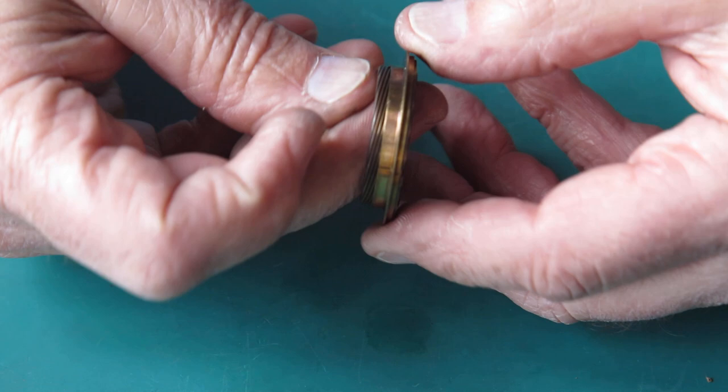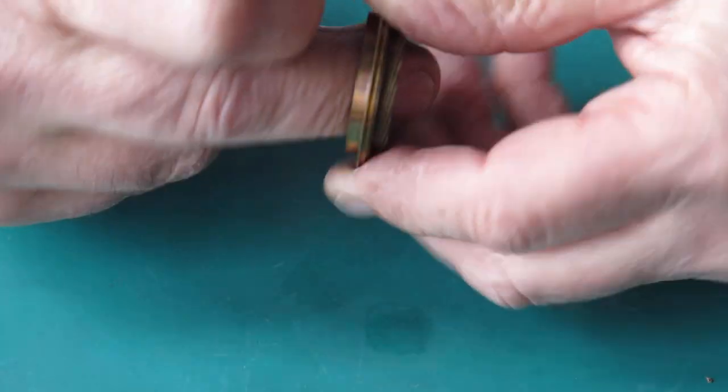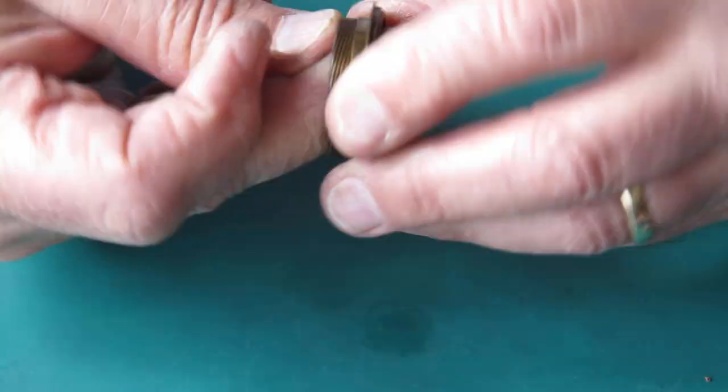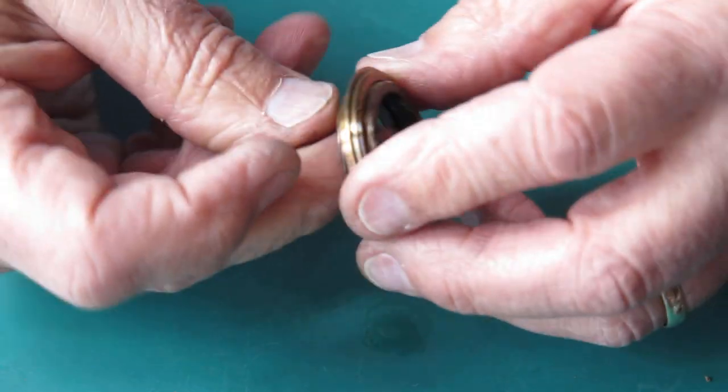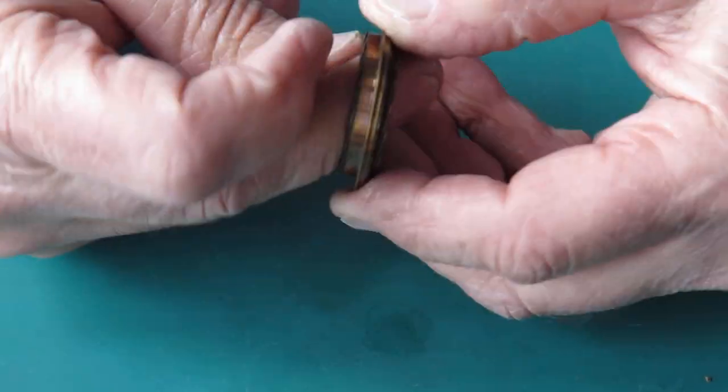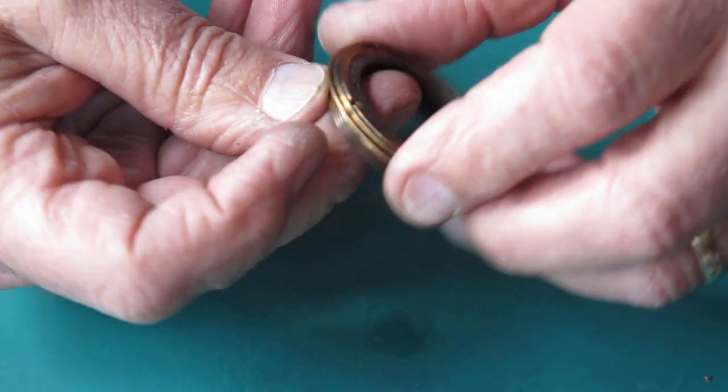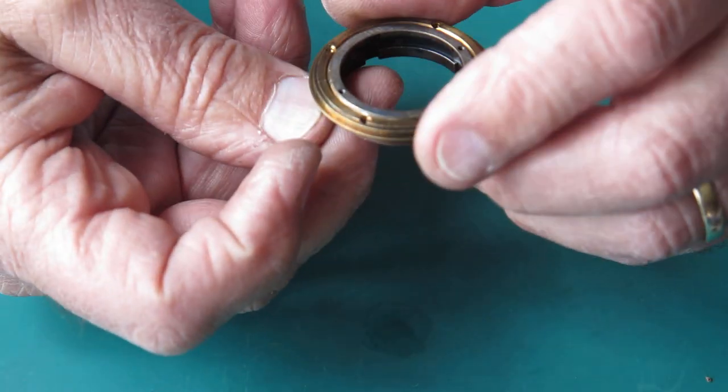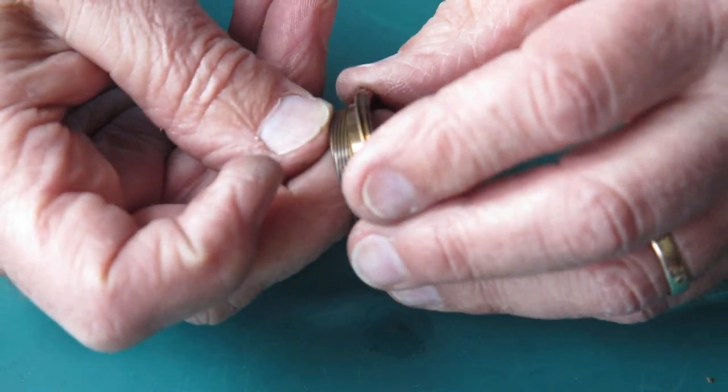So I just put a bit of naphtha onto that helical and I'm just working that. Now these parts have all been through the ultrasonic cleaner, so they've been degreased. They've been through a strong domestic detergent in the ultrasonic cleaner, and that has removed all the old grease and hopefully dust and other rubbish at the same time. But it does mean that there's no lubricant here.